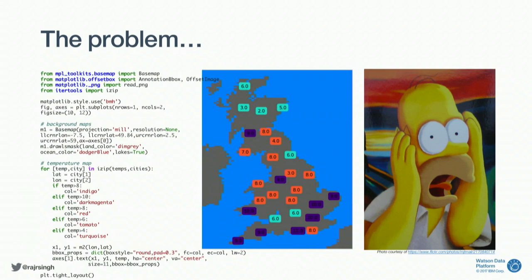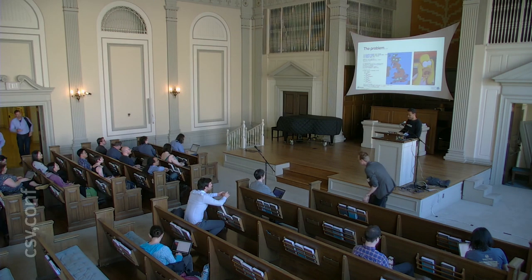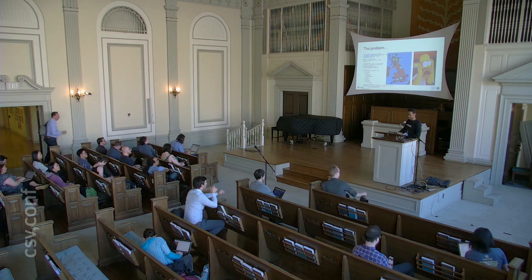You import a bunch of libraries, use matplotlib, use some obscure style, define your figure, your axes, set all your colors. You probably take hours to figure out exactly what you want — this is probably the simple version of hours or days worth of work. And at the end of it, you get something that's not really bootstrap-type 2017 web design.